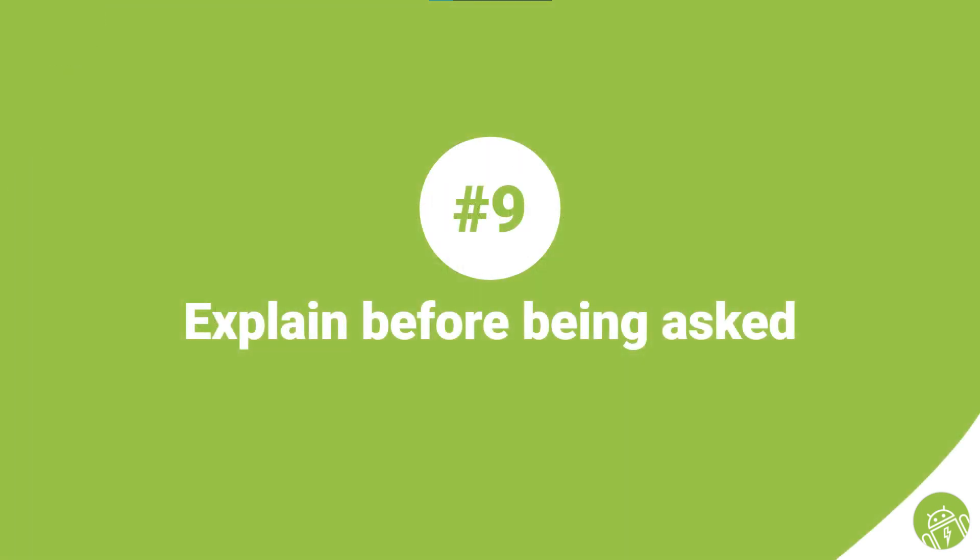Number nine: explain before being asked. Some commits might need explanation about edge cases, what issues you faced while doing the task, and why you decided to do it a certain way. You already did the changes, which means you as the commit author should know exactly which parts of the code need details about the why and how. So be smart and open some info discussions on your pull request lines and explain those edge cases before a reviewer asks.